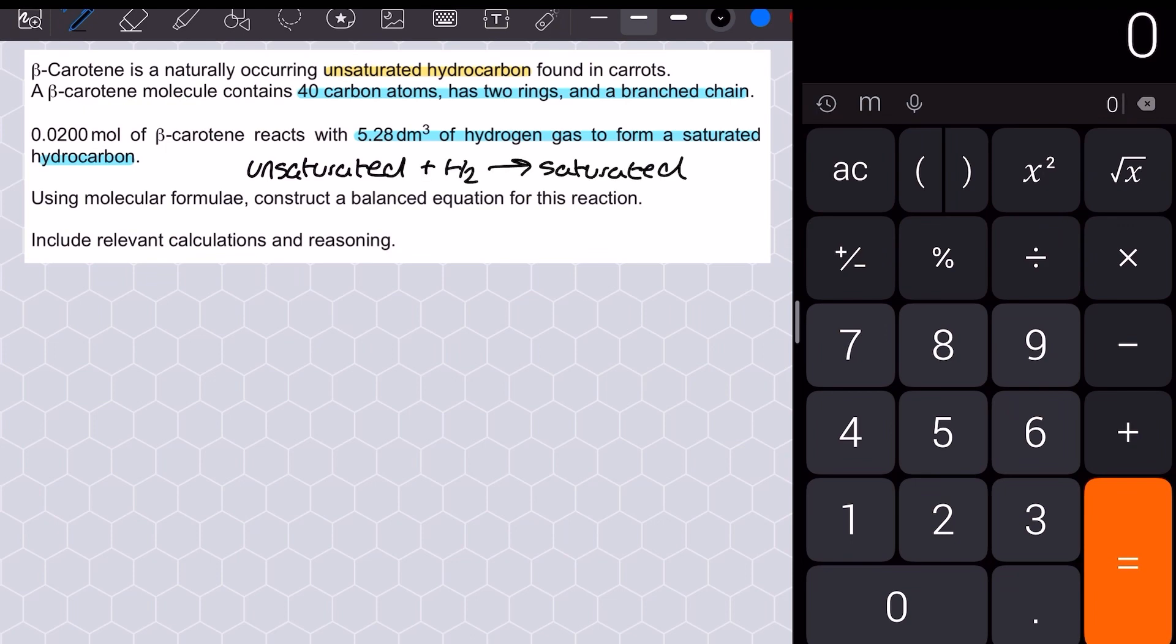What we need to do is use all the data in the question to first determine the formula of the organic reactants and products, along with a balanced reaction equation showing the involvement of the hydrogen.